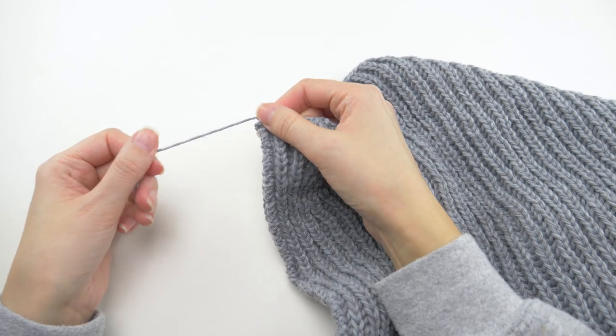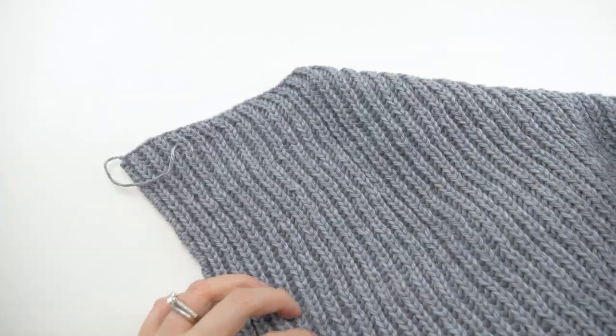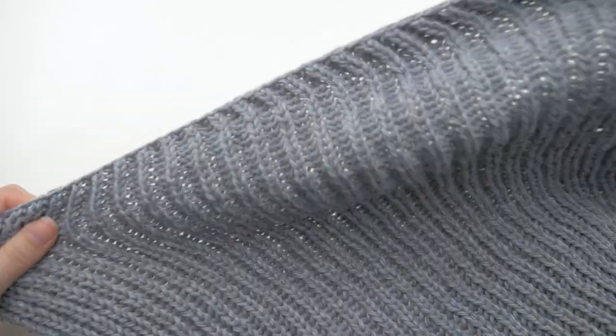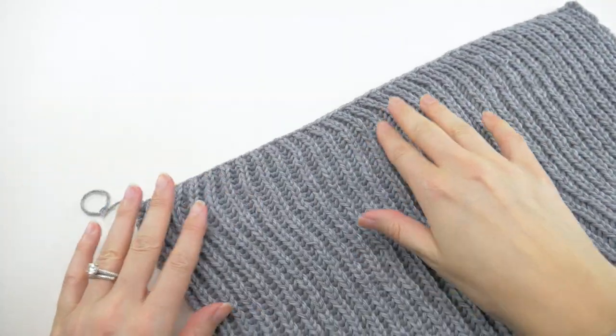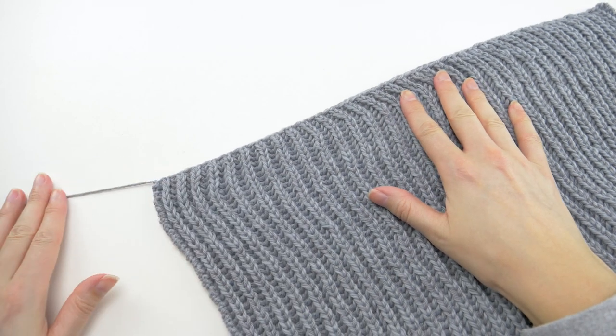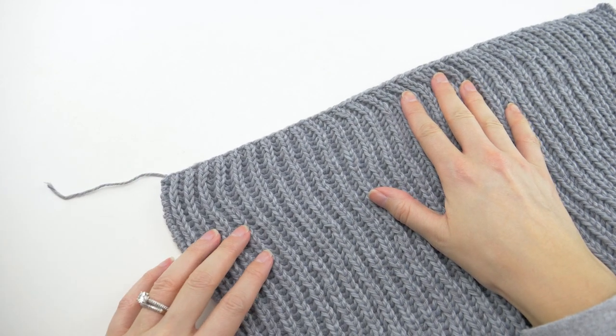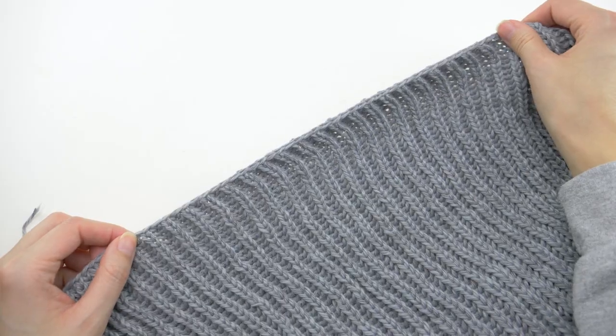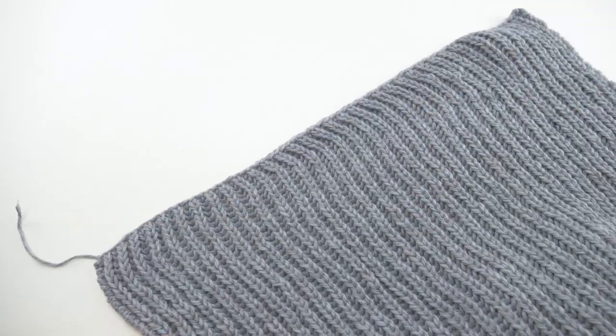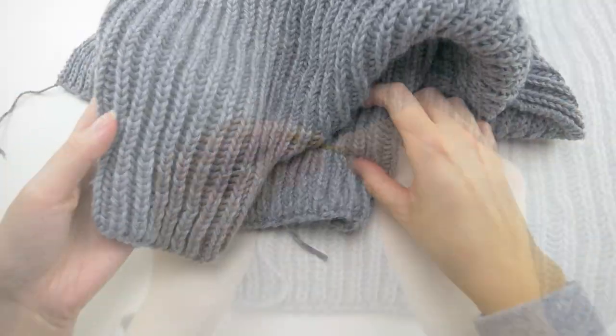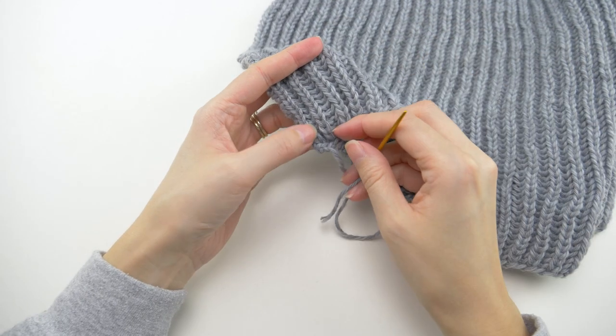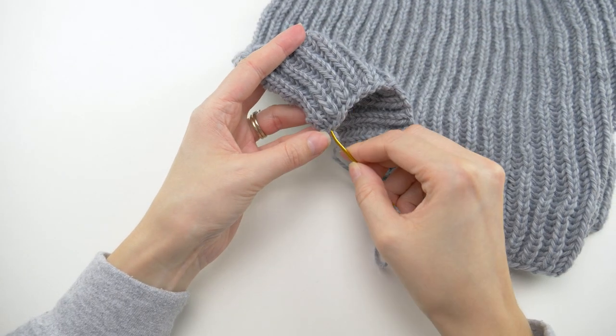Then fasten off by pulling the tail through the last loop. So I played a little game of yarn chicken here, because I didn't leave at least 2 yards of yarn, and I just barely won. That's why my tail is so short here, and that's why I encourage you to not start your bind off, unless you have at least 2 yards of yarn left. Alright, now all that's left to do is weave in the ends.